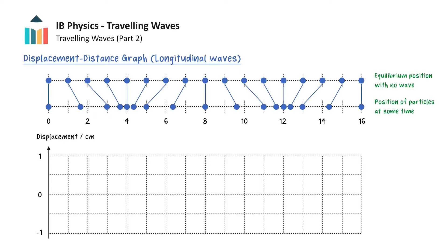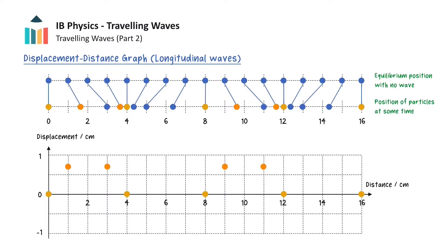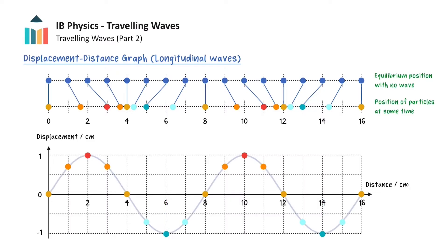On our graph, the y-axis will represent the displacement of the particles, where we have set displacements to the right to be positive. The x-axis of our graph is the position in the medium, where the particle will be located along the medium when it is not disturbed. The particles highlighted in yellow have not shifted from the equilibrium position, so we can add those locations to our graph. The particles in orange are all shifted to the right by about 0.75 centimetres. The red particles are both shifted 1 centimetre to the right, and their equilibrium positions were at 2 and 10 centimetres, so we can add those on the graph. The remaining particles are all shifted to the left, so they will have negative displacements. The light blue particles are shifted to the left by about 0.75 centimetres, and the darker blue particles are shifted to the left by 1 centimetre. The smooth curve can then be drawn to connect all of our points.